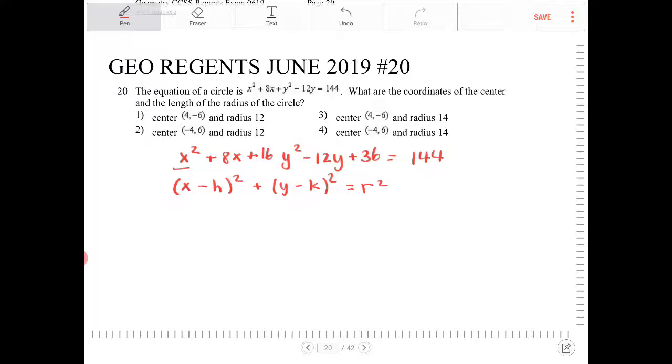Now, what we add on one side of the equation, we have to add on the other. So we're going to be adding 16 and 36, thereby not changing the original equation at all.